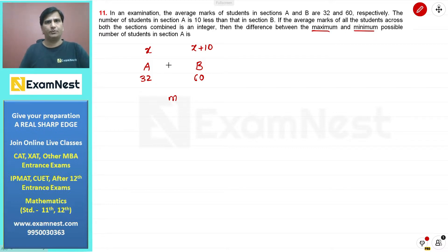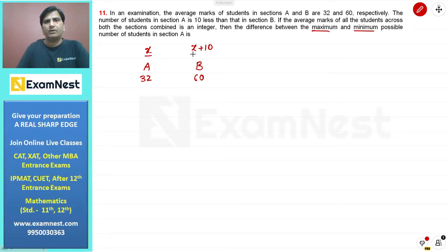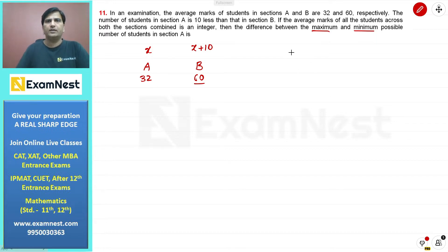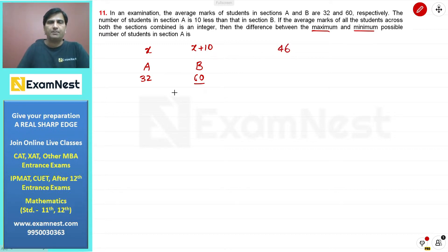पहले हम logic पर focus करेंगे। एक चीज़ यहां ध्यान रखें: Section A में number of students कम हैं और Section B में जादा हैं, तो जब भी average लेंगे, वो value इन दोनों की middle value से towards 60 move करेगी। अगर 1 to 1 की ratio में लेते, तो average 92/2 = 46 होता। पर क्योंकि B में students जादा हैं, average 46 से higher होगा।